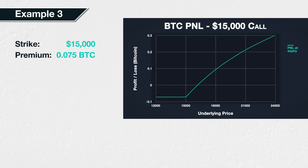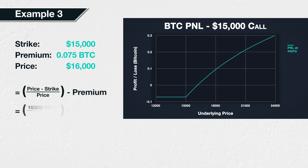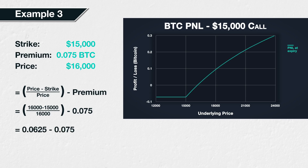Example three: suppose Bitcoin is currently trading at a price of fourteen thousand dollars. We expect the price to increase, so we purchase a Bitcoin call option with a strike price of fifteen thousand dollars. The price of this call option is 0.075 BTC. At expiry, the price of Bitcoin has increased to sixteen thousand dollars. Since sixteen thousand is above the strike price of fifteen thousand, we use the formula: (16,000 − 15,000) / 16,000 − 0.075 = 0.0625 − 0.075 = negative 0.0125 BTC. This long call option position therefore made a loss of 0.0125 BTC.